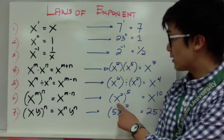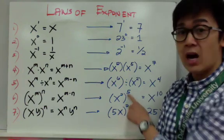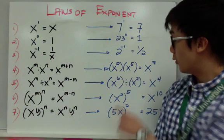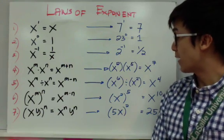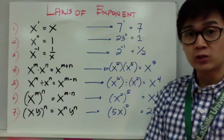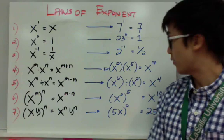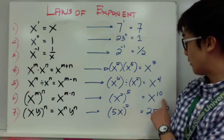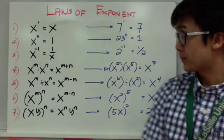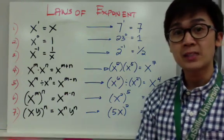An example is x squared raised to 5. To simplify x squared raised to 5, you need to multiply 2 and 5. Therefore, we have x raised to 10.